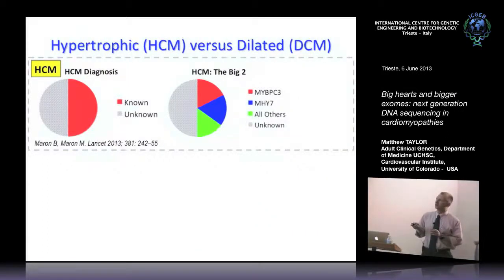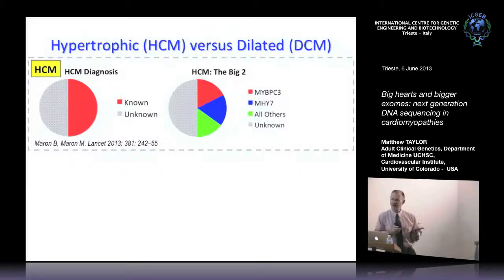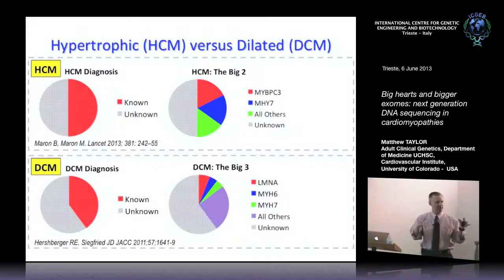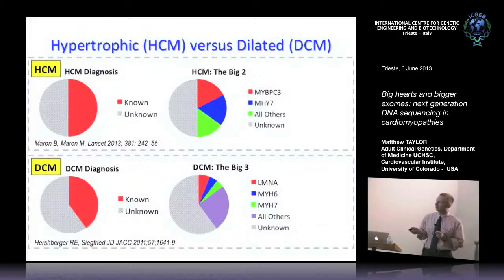For hypertrophic disease, about half the time we can find the gene, and if we find it, it's probably going to be one of two major genes. For dilated disease, until fairly recently we could find the needle in the haystack about 35 to 40% of the time. For dilated disease, it wasn't two major genes — there were three fairly prominent genes and then a whole bunch of others causing the disease, making it much more complicated.